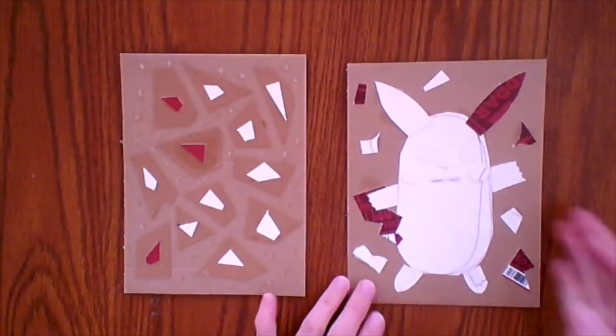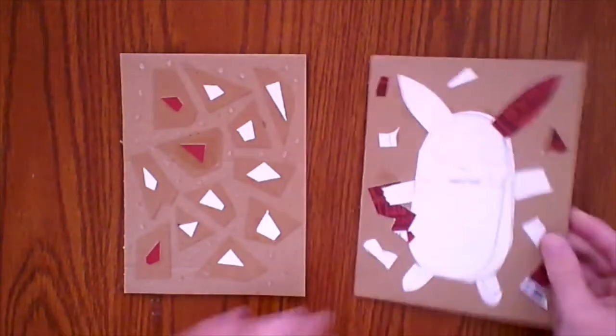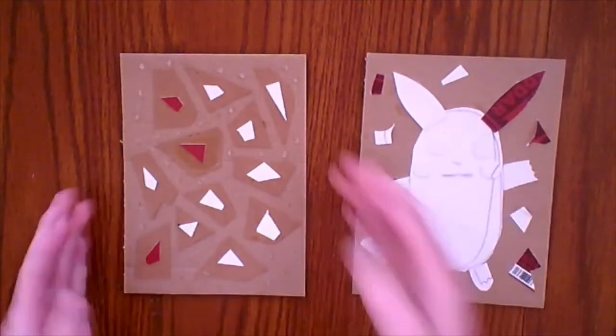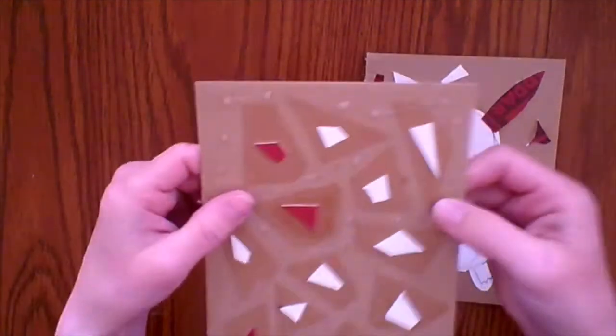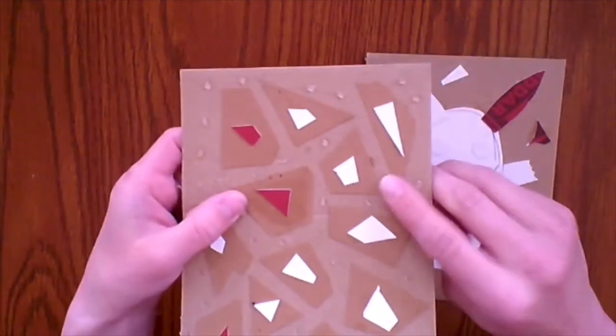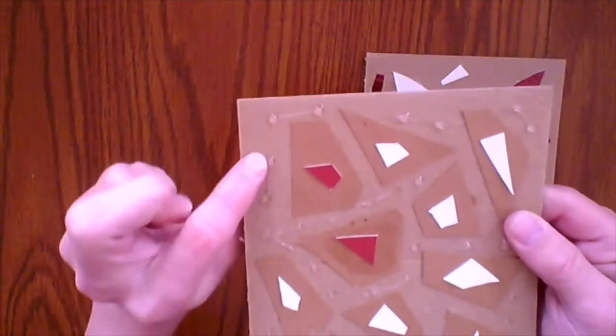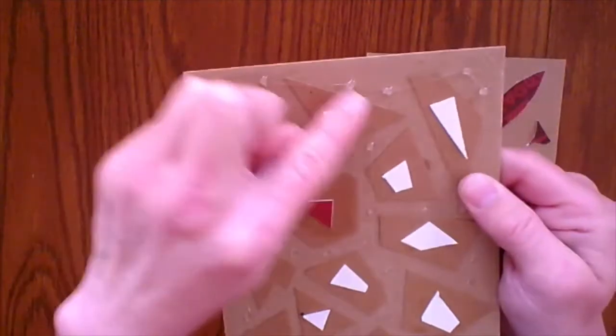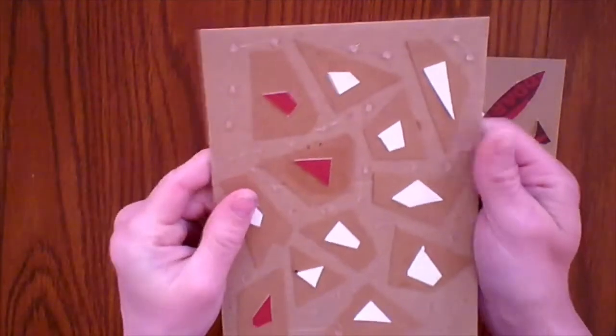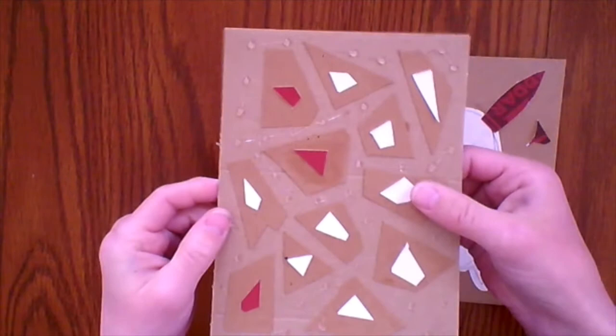The glue has dried on my Pikachu. And while I was waiting for it to dry, I got some inspiration on my abstract one to add some shapes inside the shapes. And I even took a hot glue gun and put some dots of glue to add some more texture.